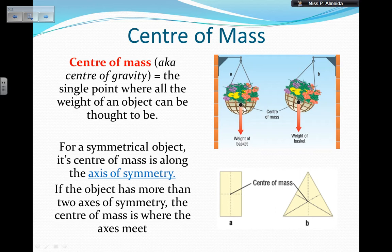And it's the same here in this basket — I can say that the weight is all over the place, or I could say that all the weight, let's say 2 newtons, instead of being all over the place, is right here at the center of mass of that object. For a symmetrical object, the center of mass is along the axis of symmetry. If the object has more than two axes of symmetry, the center of mass is where they meet. So here, if I fold this card along this axis, it's the same as putting a mirror at the center — you'd see the same on either side. That's another axis of symmetry, so center of mass is right at the center.